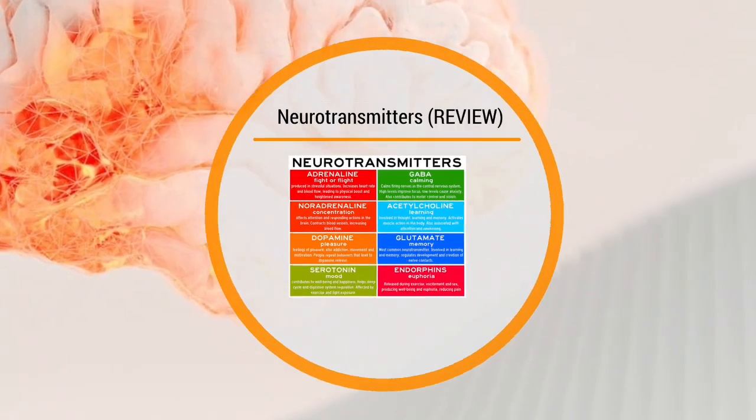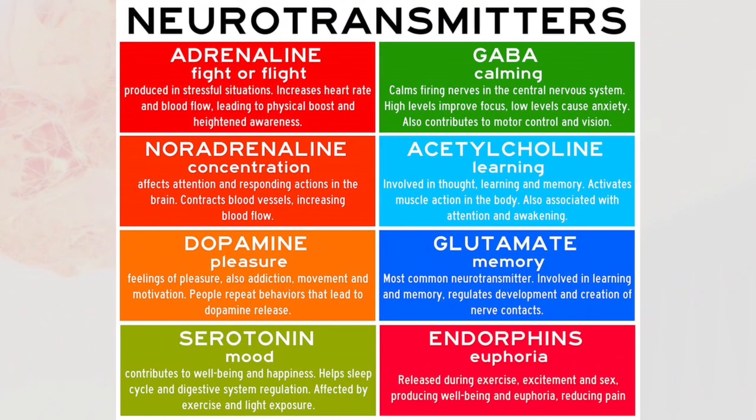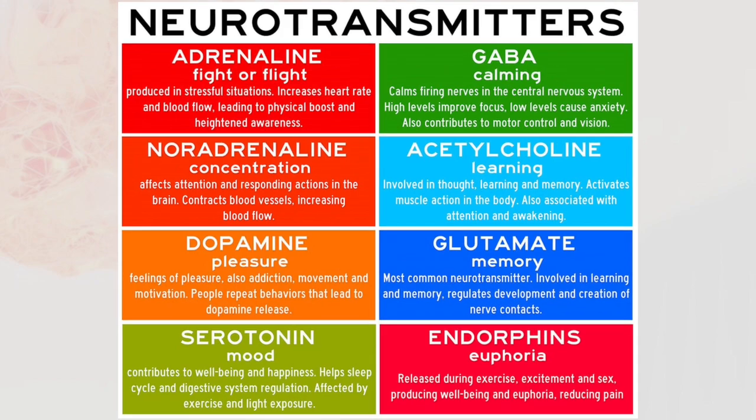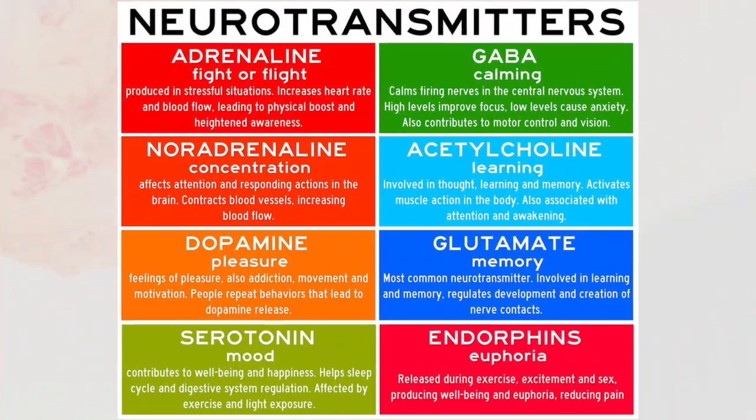Just a quick review of neurotransmitters we covered earlier: glutamate and GABA, noradrenaline is for concentration, acetylcholine is for learning and memory, dopamine is for pleasure and rewards, glutamate is for memory, serotonin is for mood, and endorphins as described earlier.